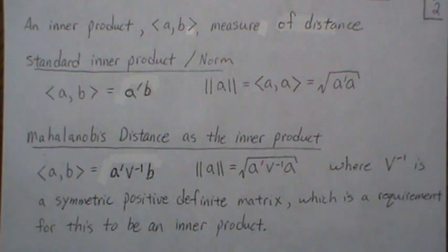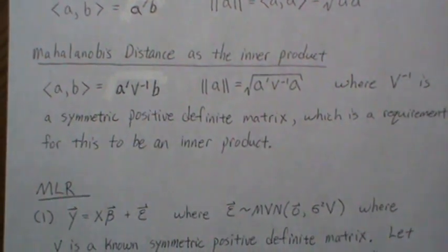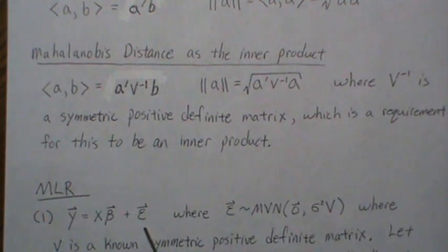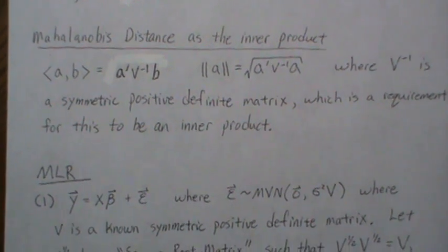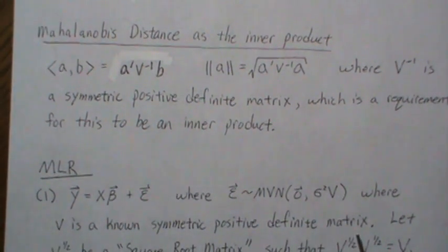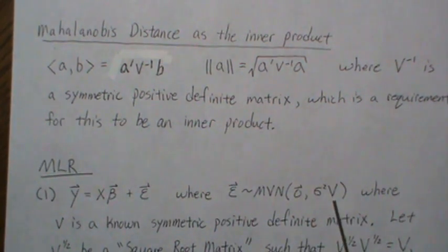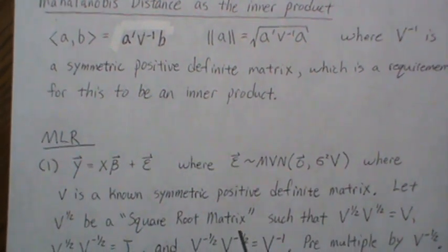We're going to jump right into multiple linear regression. We assume our data follows a linear model Xβ + ε, and we assume that ε is multivariate normal with mean zero and variance-covariance matrix σ²V, where V is a known symmetric positive definite matrix. So this is not the standard multiple regression setting where V is the identity matrix. We're going to let V^(1/2) be a square root matrix of V — I have a video titled 'Square Root Matrix' if you want to review that topic.